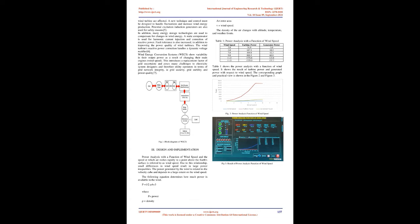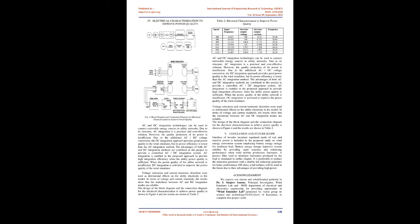The high cost of fossil fuels, together with environmental concerns, require a significant increase in the use of renewable energy sources. Due to the speed behavior of wind turbines, it is difficult to achieve good power quality. The voltage and power of components connected to the wind turbine are affected. A new technique and control must be designed to handle fluctuations and increase wind energy production. Potential excitation induction generators are also used for safety reasons. Many energy storage technologies are used to compensate for changes in wind energy. A static compensator is used for harmonic current injection and correction of reactive power. Fault tolerance is also increased, improving the power quality of wind turbines, and the wind turbine's reactive power correction handles a dynamic voltage rectifier.